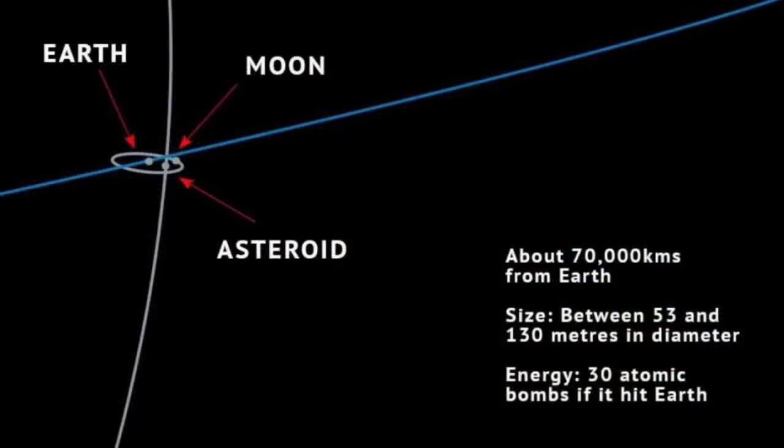This is just to show you how close it was. Here you see the Earth, the Moon, and asteroid 2019 OK. Had it hit the Earth, it would have felt like 30 atomic bombs going off.